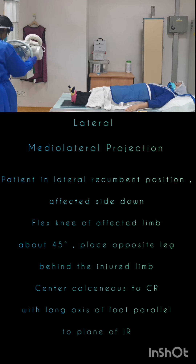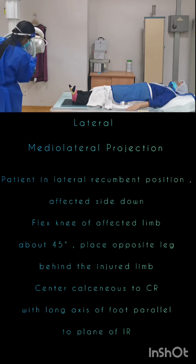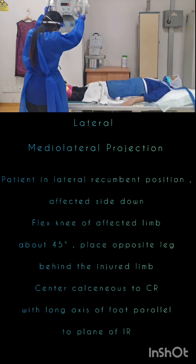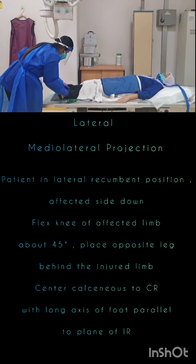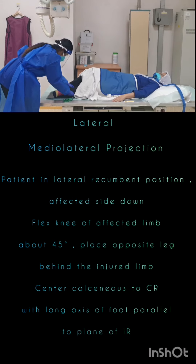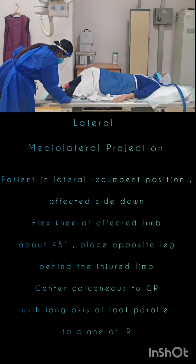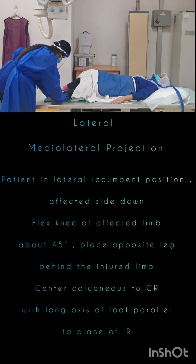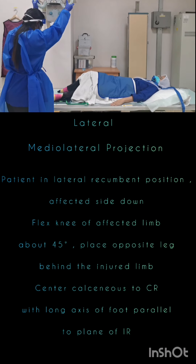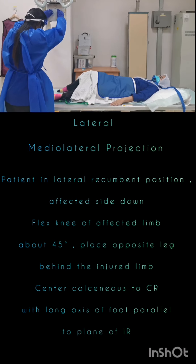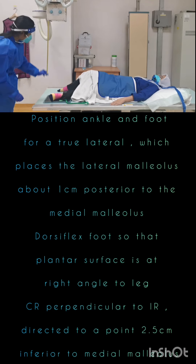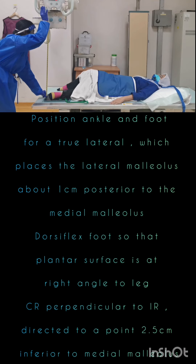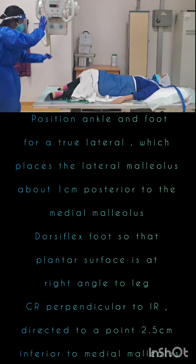Now the next projection is the lateral calcaneum. The patient is in a lateral recumbent position, affected side down, with the knee of the affected limb flexed at about 45 degrees. Place the opposite leg behind the injured limb. Center the calcaneus to the CR with the long axis of the foot parallel to the plane of the IR. We have to make sure the patient turns fully to the lateral side so that the leg is in true lateral — approximately true 45-degree lateral.